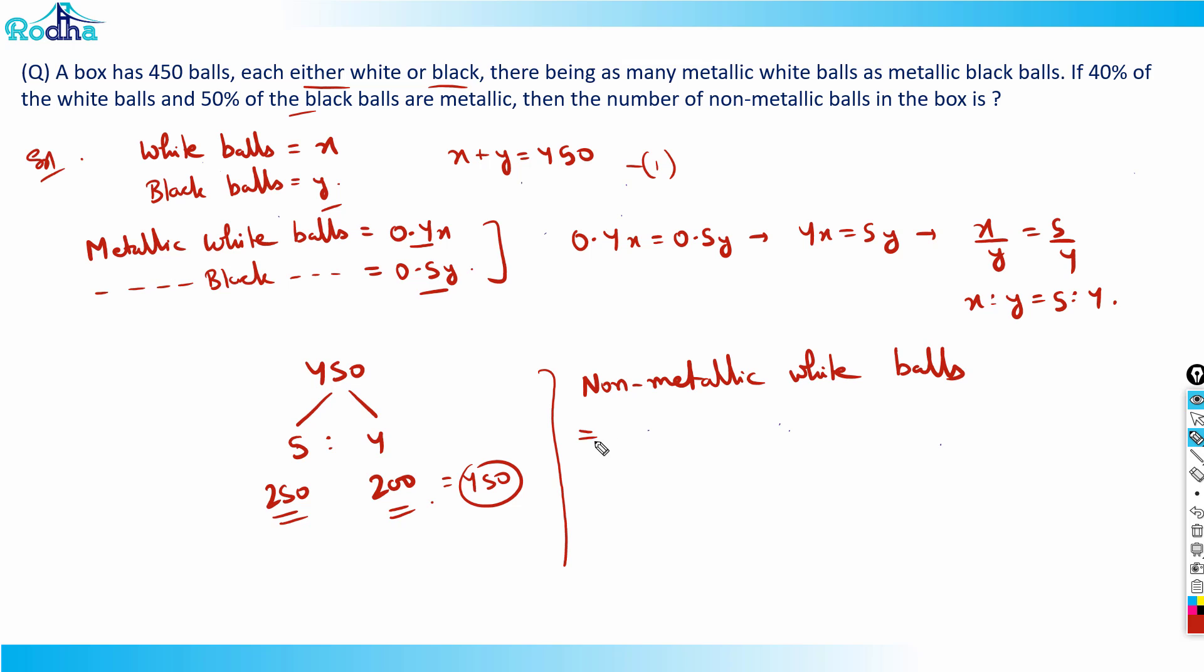What I can calculate is non-metallic white balls equals - if there are 0.4X metallic white balls, then 0.6X non-metallic is left. And if there are 0.5Y metallic black balls, then 0.5Y non-metallic is left. So 0.6X plus 0.5Y, where X is 250 and Y is 200. That's 0.6 times 250 plus 0.5 times 200.